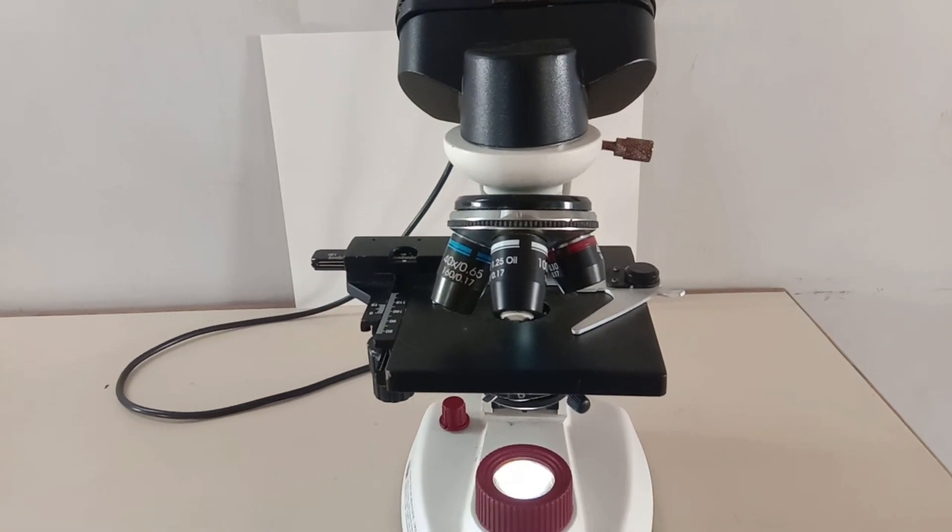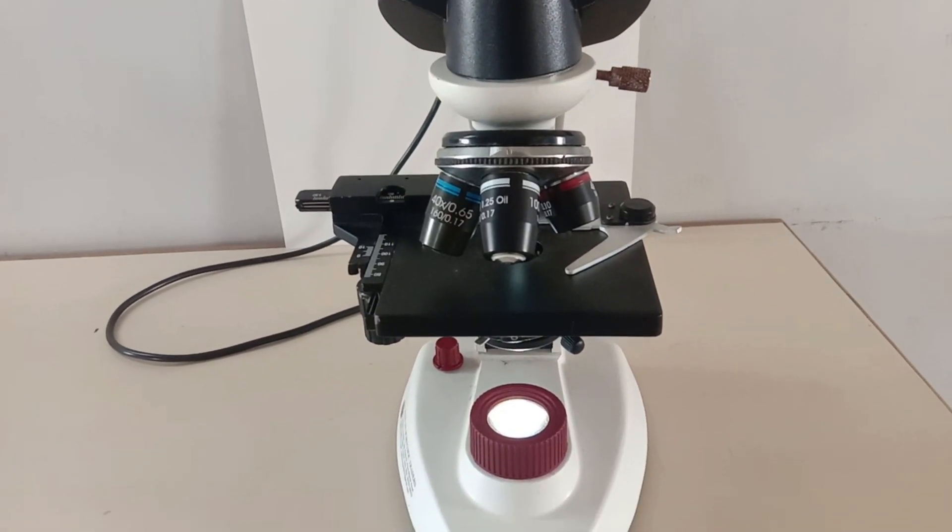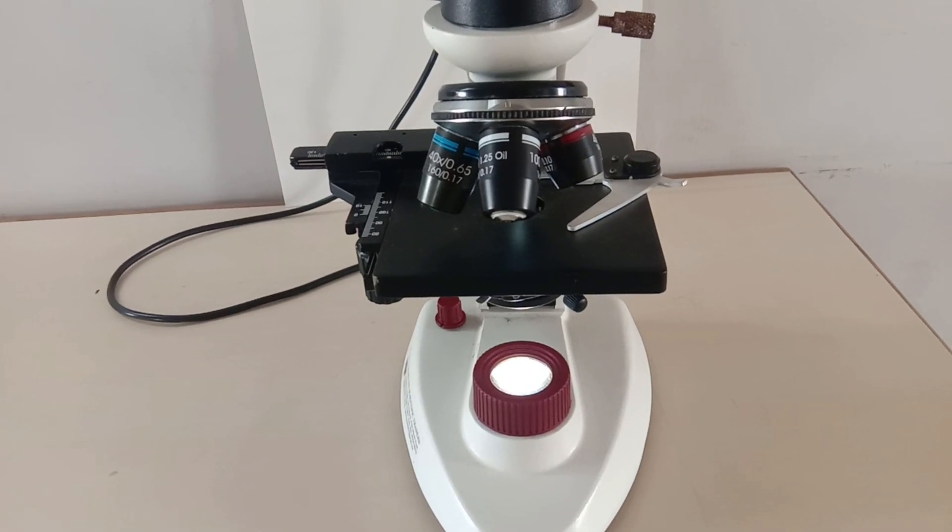The one near the eye is called the eyepiece and the one near the object is said to be the objective.